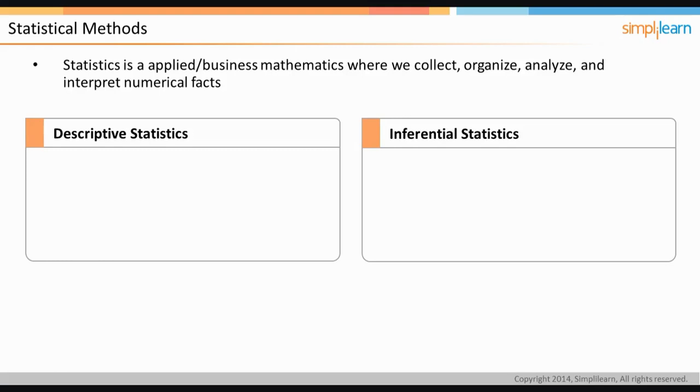Statistical methods are the concepts, models, and formulas of mathematics used in the statistical analysis of data. They can be subdivided into two main categories: descriptive statistics and inferential statistics.